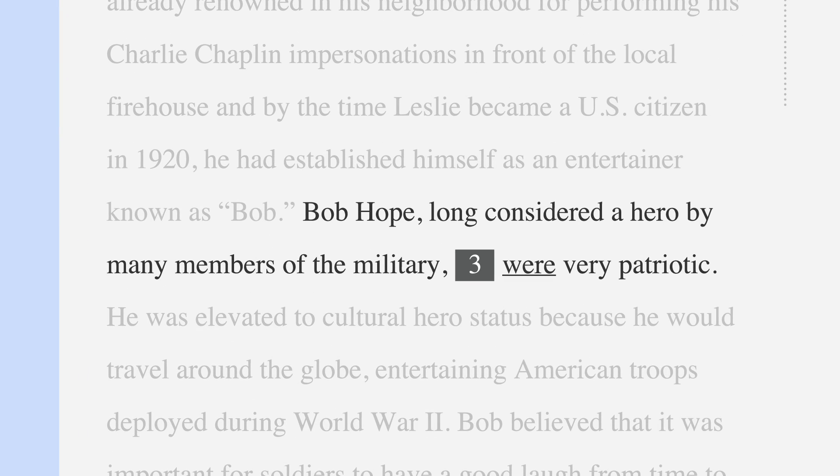Let's take a look at an SAT example. Bob Hope, long considered a hero by many members of the military, were very patriotic. We need to read the sentence, determine if there is an error, and then select the answer choice that works best in the underlined portion. In this sentence, long considered a hero by many members of the military is a modifier. Since it's a modifier, we know that the subject won't be found in this phrase.